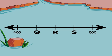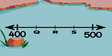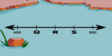Let's use this example. Step one, find the benchmarks and the interval. 400 and 500 are benchmarks. 500 take away 400 is 100, so the interval is 100.